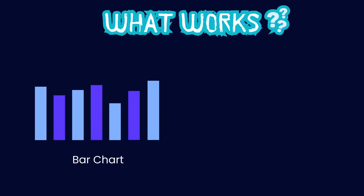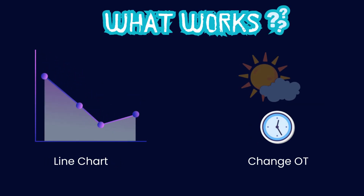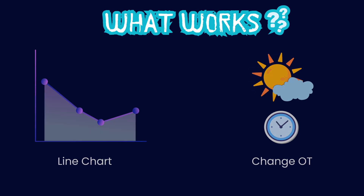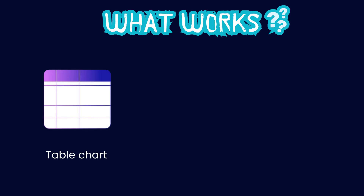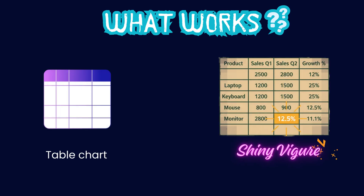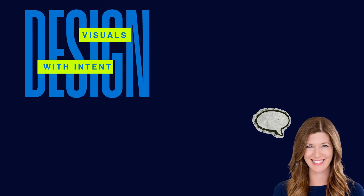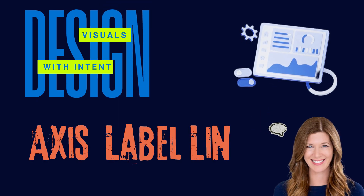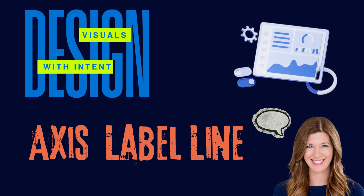So what works? Use bar charts to compare categories, line charts to show change over time, scatter plots to show relationships between variables, and highlight tables when numbers matter but one figure needs to shine. She emphasizes: design visuals with intent. Every axis, every label, every line should help your audience see what matters faster.